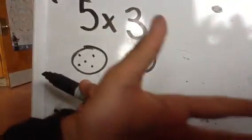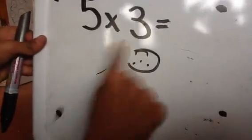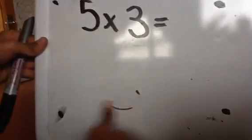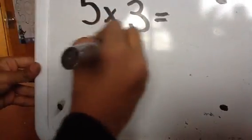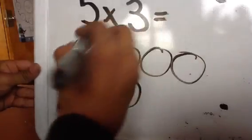That's the answer for 5 times 3. Or another way you can do it, if it is 3 times 5, is to make 5 groups of 3 in each.